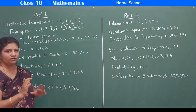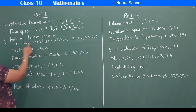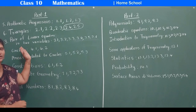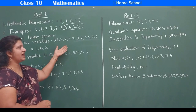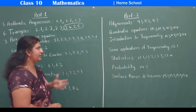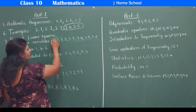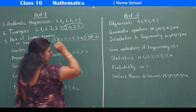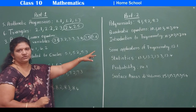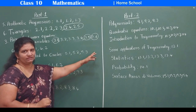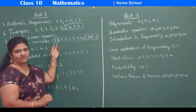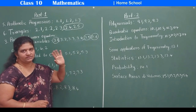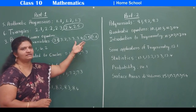Pair of Linear Equations in Two Variables was the third chapter last year and remains the third chapter this year. We used to have six exercises, but now for this academic year, the first exercise is deleted, and 3.5 and 3.6 are deleted. That means the reducing method and cross multiplication method are deleted, along with the first exercise. So instead of six exercises, three exercises are deleted — we will be having only three exercises this year.